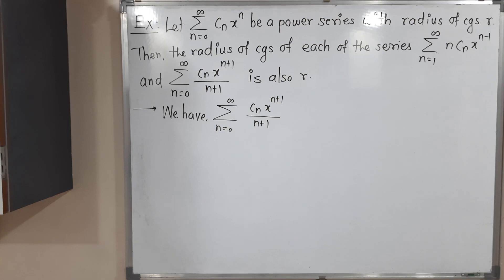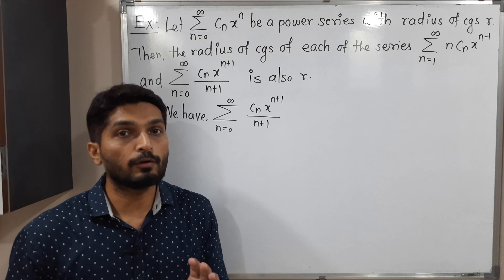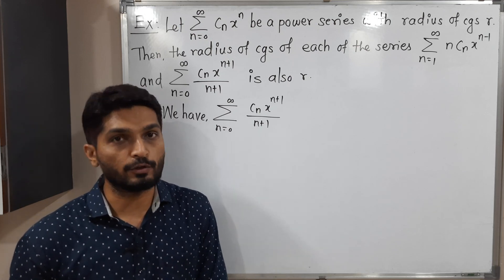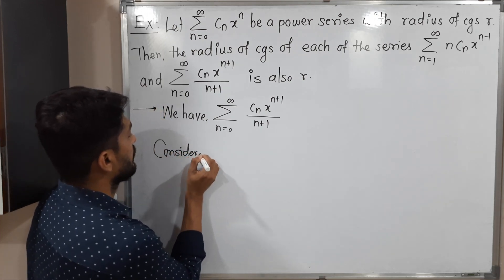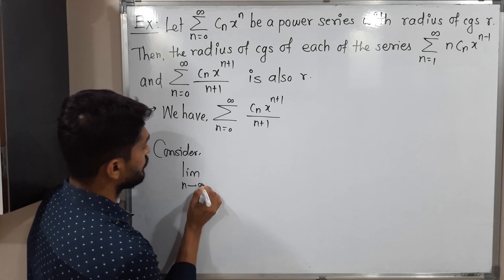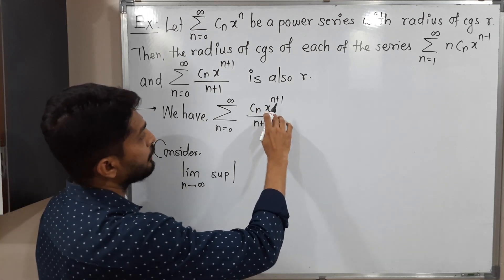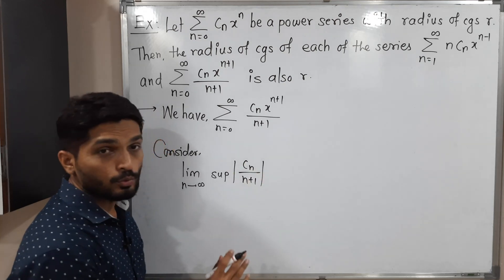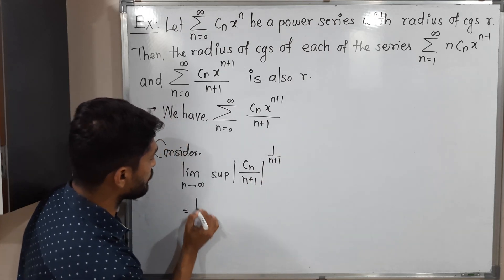Now we have the second power series and we have to find its radius of convergence. To find the radius of convergence, we need to calculate the value of a limit and then take its reciprocal. The limit is: limit n tends to infinity, supremum of mod of the coefficient of x raised to n plus 1, which is Cn upon n plus 1, raised to 1 upon n plus 1.